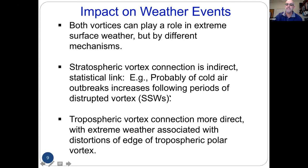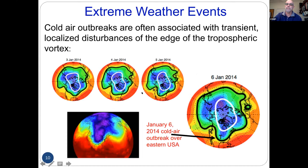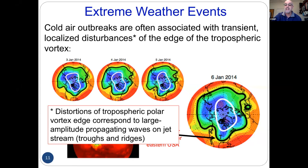The stratospheric vortex link is more indirect and statistical — increased probability of cold air outbreaks following periods of a disrupted vortex. The tropospheric vortex connection is much more direct. These extreme weather events can be viewed as distortions or disturbances propagating around the edge of the tropospheric vortex. The cold air outbreak over the Eastern US in 2014 was just a disturbance to the edge of the vortex.